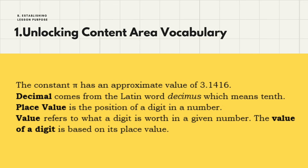Let's unlock our content vocabulary. The constant pi has an approximate value of 3.1416. The word 'decimal' comes from the Latin word 'decimus,' which means tenth. 'Place value' is the position of a digit in a number. 'Value' refers to what a digit is worth in a given number, and the value of a digit is based on its place value. Always align the decimal point to correctly determine each digit's place value and value.